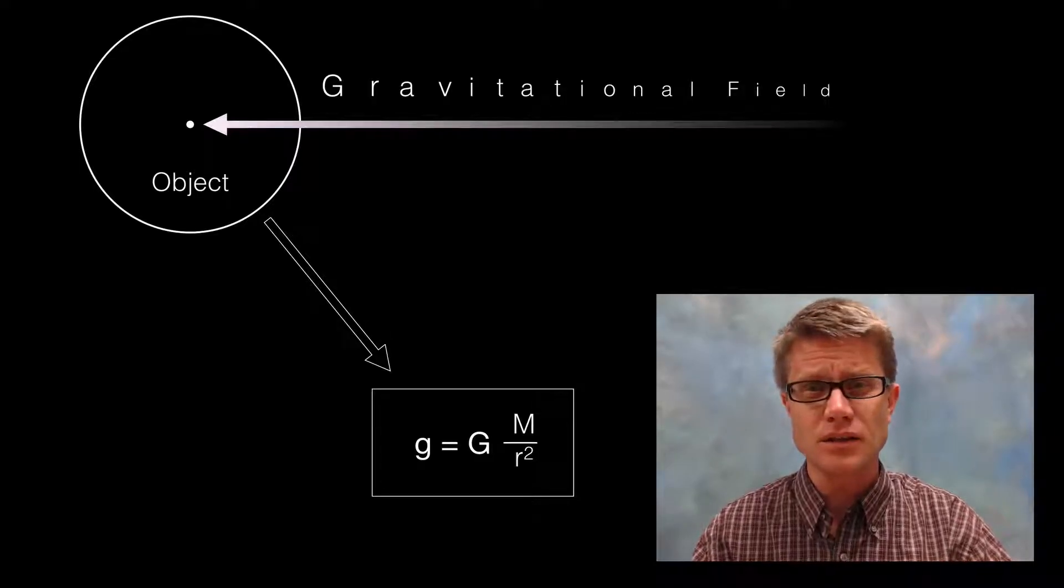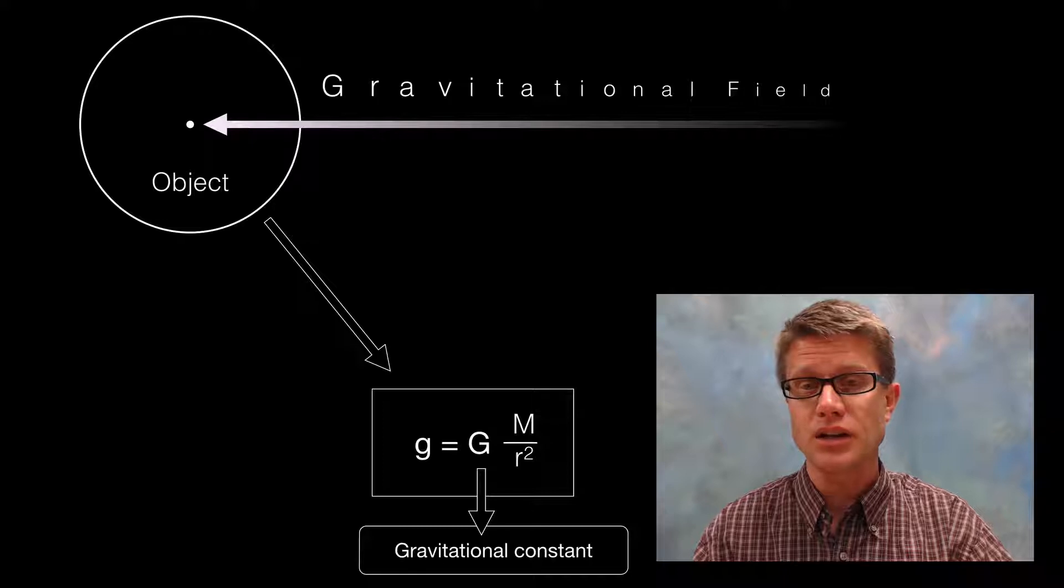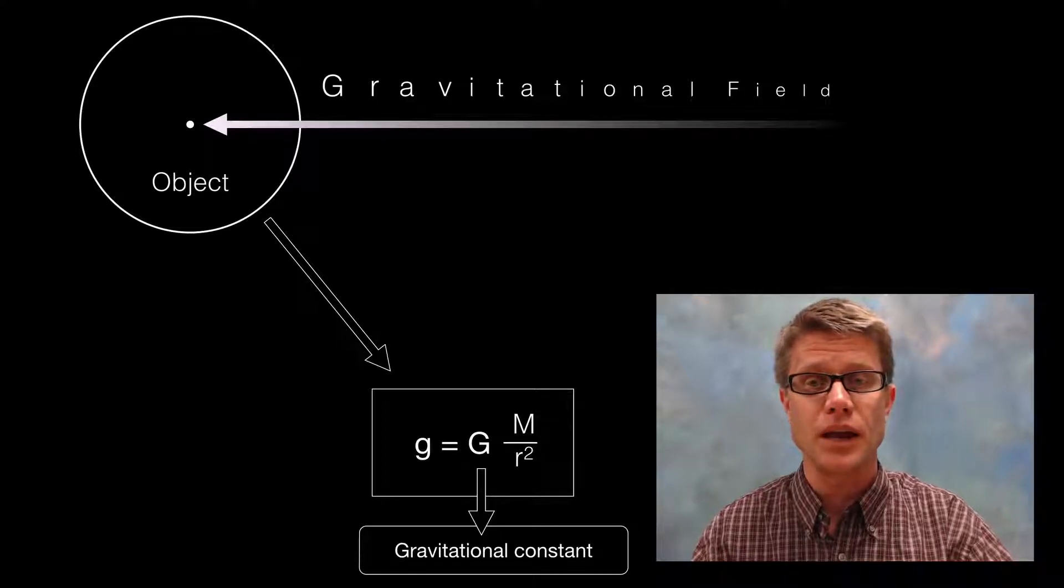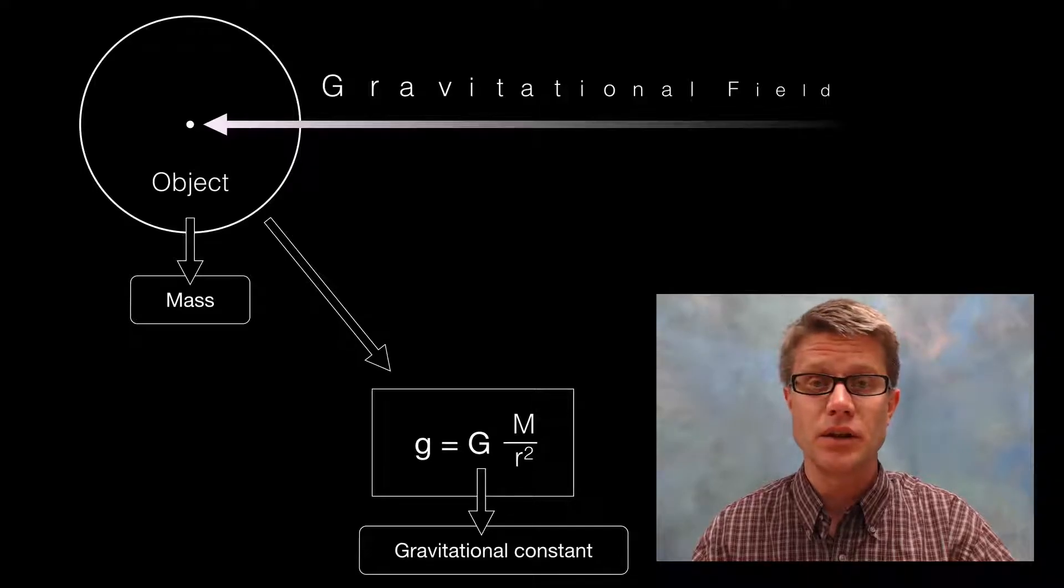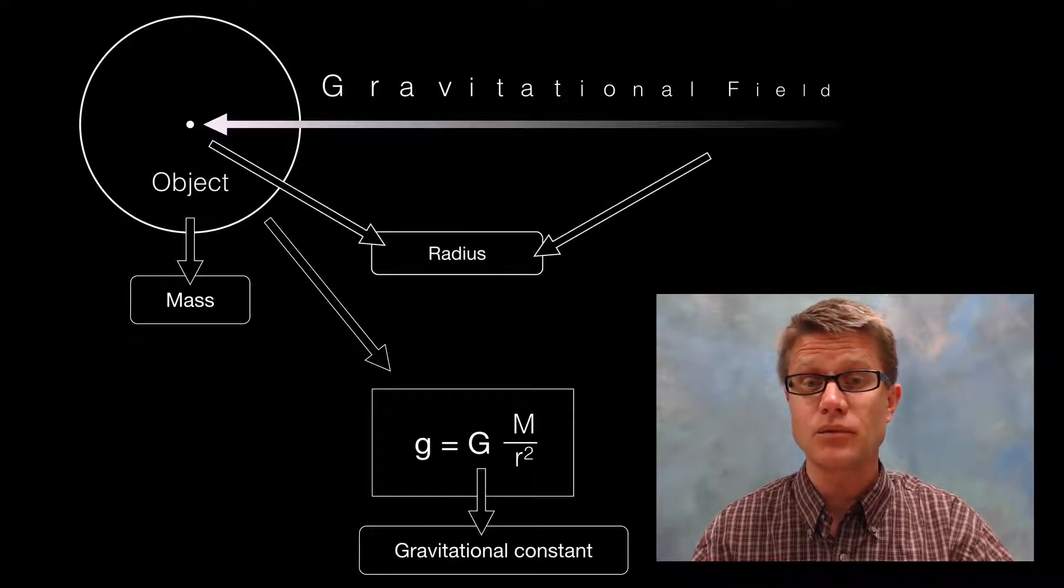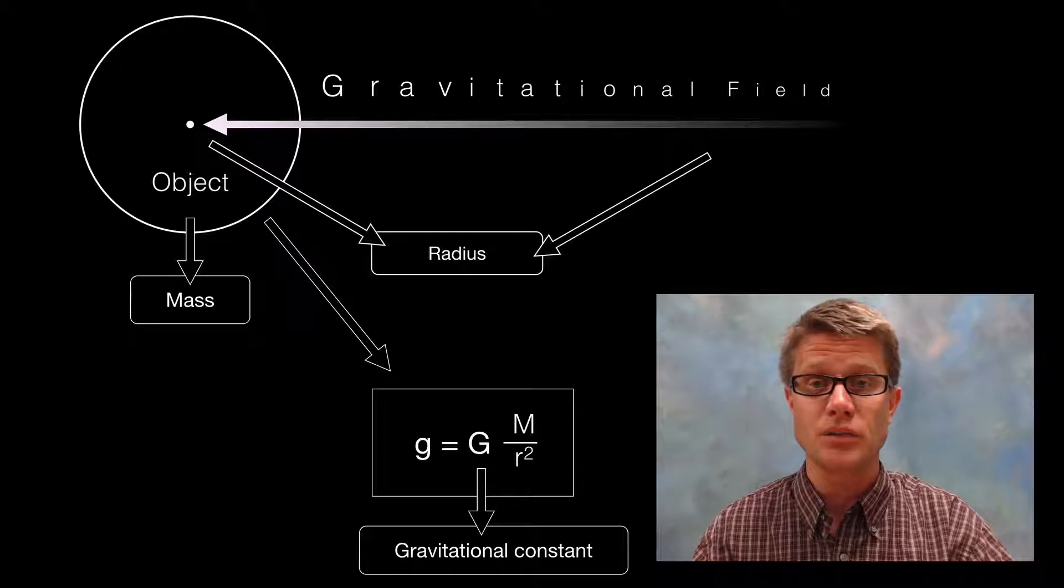Now you might say there's three things in this equation. The first one is a gravitational constant. We often refer to that as big G. But the other two things that are going to affect the gravitational field strength are the mass of the object and then the radius or the distance from the object.